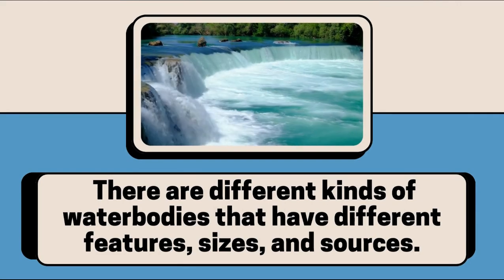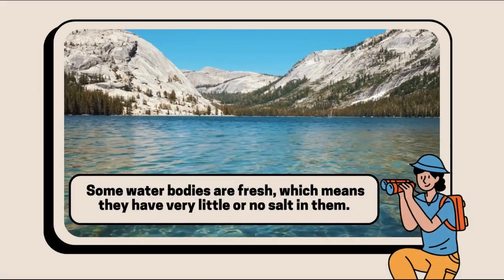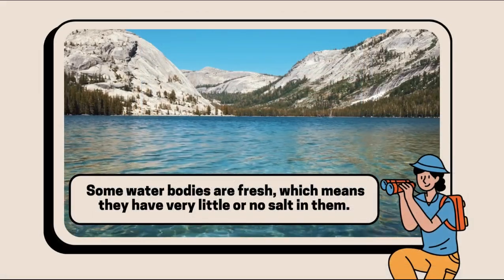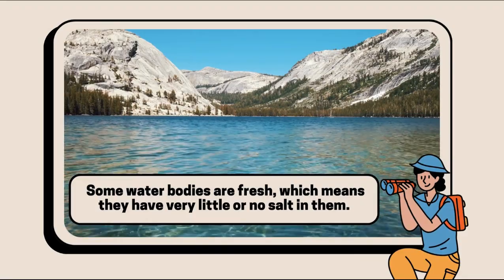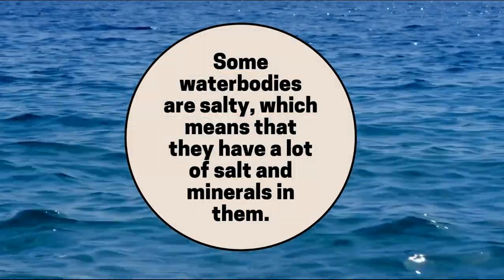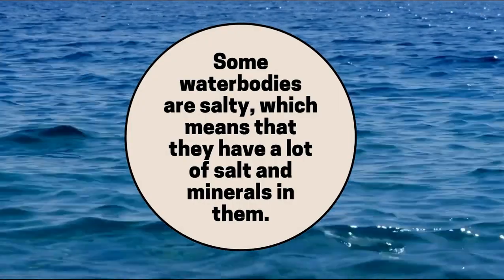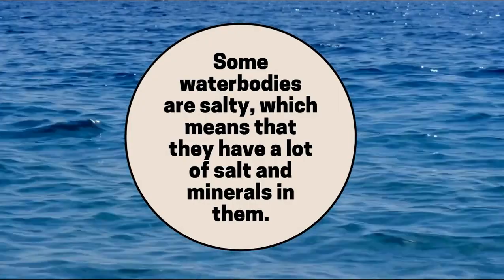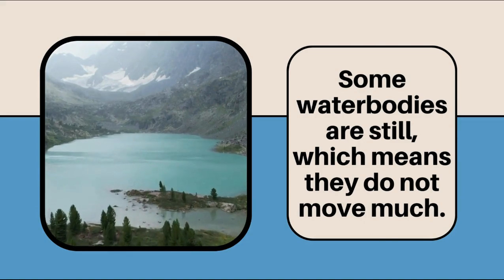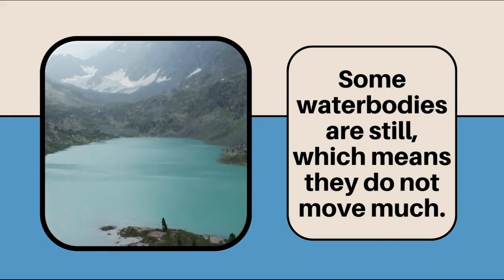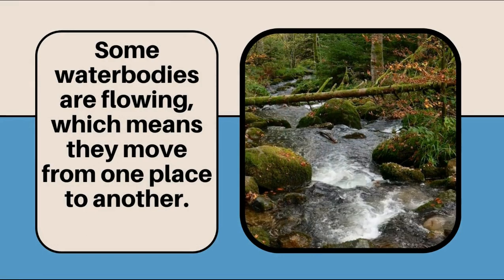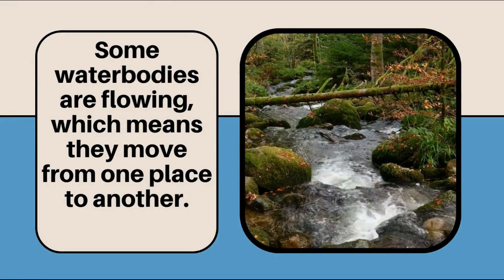Some water bodies are fresh, which means they have very little or no salt in them. Some water bodies are salty, which means they have a lot of salt and minerals in them. Some water bodies are still, which means they do not move much. Some water bodies are flowing, which means they move from one place to another.